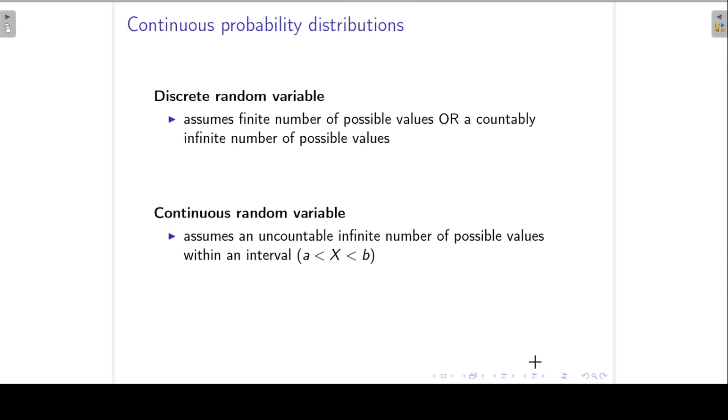In a previous lecture, we distinguished between discrete and continuous random variables, and then we concentrated on discrete variables and probability distributions. In this lecture, we will again look at the differences between discrete and continuous random variables, and then we will look at continuous variables and density functions in more detail.